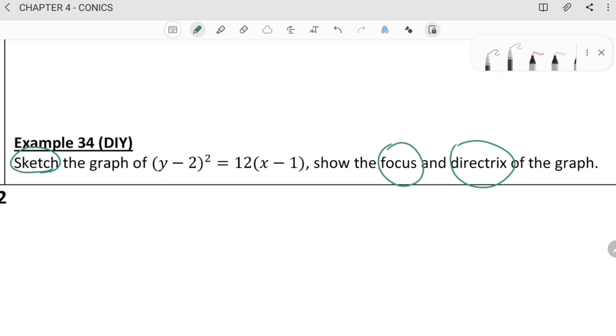And then, this is the Y squared. Y squared. And it's positive. Okay. So, Y squared positive open right. Okay. I just give the hint. So, basically, you need to find the value of P. And the focus will be, because the V will be here, the focus will be here. So, focus H plus P. Okay. And the directrix will be minus P. Okay. That's all. I hope you can do it by yourself. Bye-bye.